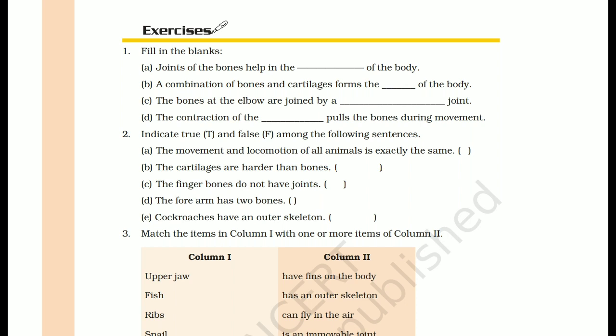Part (b): combination of bones and cartilages forms the dash of the body. Bones and cartilages together form the skeleton of the body — that is, the framework or کنکال (skeleton).